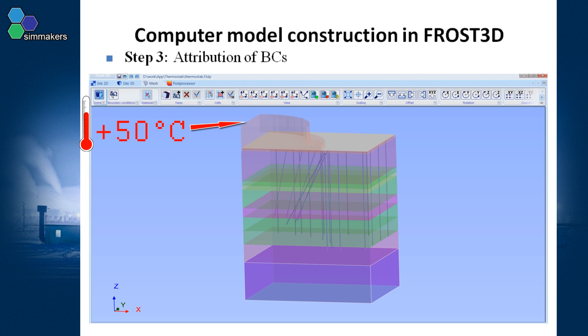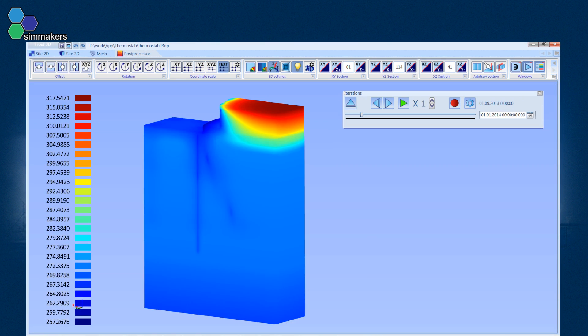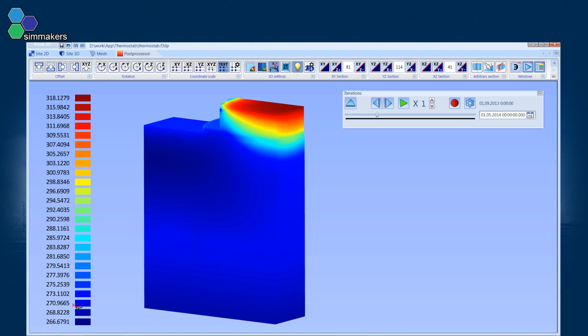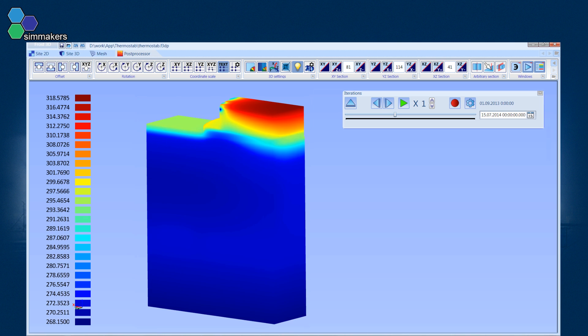We therefore essentially have a heat flow which should lead to the thawing of frozen soil. It is interesting to see the result of the interplay between the cooling devices and this heat flow from the building.